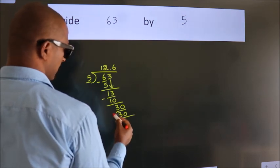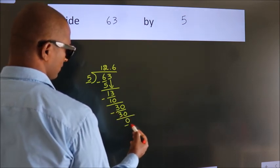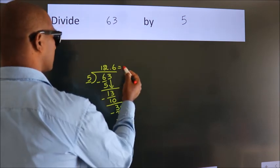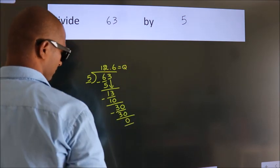Now we subtract. We get 0. We got remainder 0. So this is our quotient. So here we go, people.